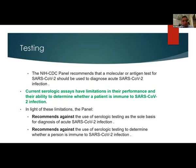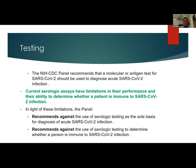Lastly, I wanted to talk about testing. There is a lot of confusion about testing of these patients. The NIH CDC panel recommended that molecular or antigen testing for SARS-CoV should be used to diagnose acute infection, which means the current serological assays have some limitations in their performance and their ability to determine whether a patient is immune to SARS-CoV. The panel recommended against use of serological testing as a sole basis for diagnosis of acute SARS-CoV, and also recommended against using serological testing to determine whether a person is immune, because the immunity concept of SARS-CoV has not been established as of yet. The standard of testing should remain molecular or antigen testing rather than serological.